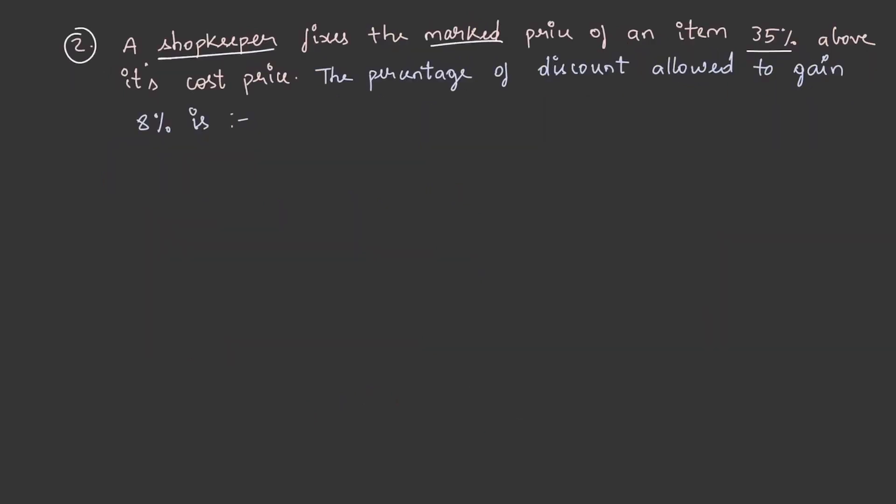In this question, as we don't know the value of cost price, let's assume the cost price as rupees 100. And it is given that the marked price is 35% above the cost price.